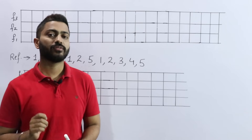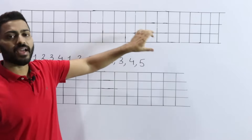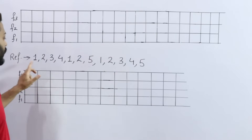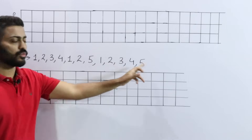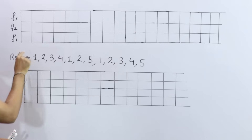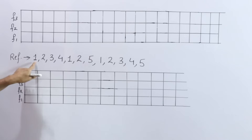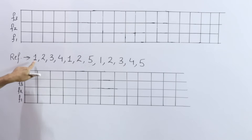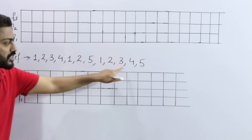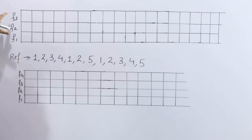Let's solve a question on First In First Out (FIFO) page replacement. We are given 3 frames and a reference string: 1, 2, 3, 4, 1, 2, 5, 1, 2, 3, 4, 5. This represents the sequence in which pages are demanded by the CPU. We have 3 frames in main memory where pages can be loaded.